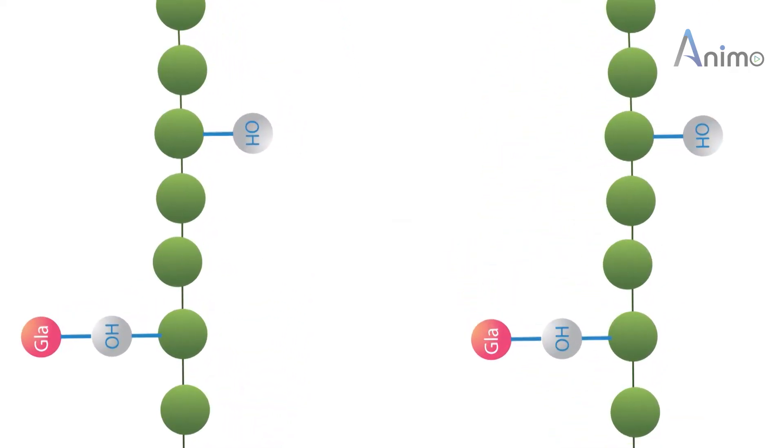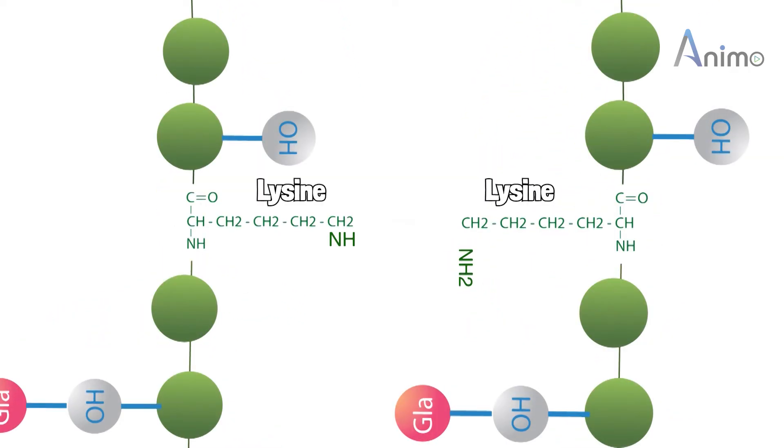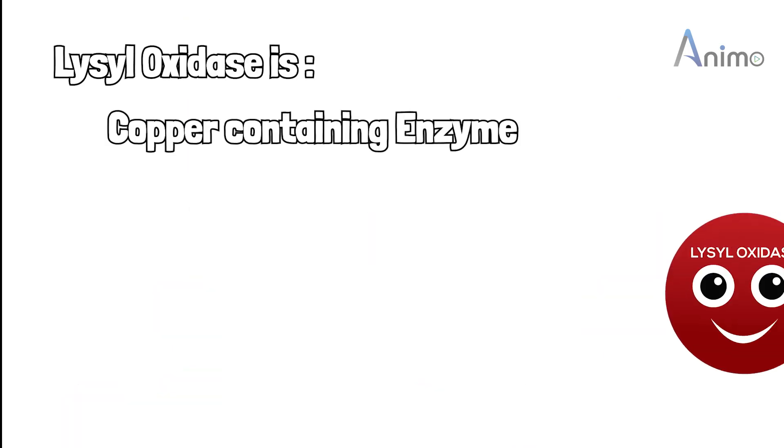The remaining group, which is an aldehyde group, comes closer and combines with an amino group of another chain, and this results in a condensation reaction, and a cross-linkage is formed.